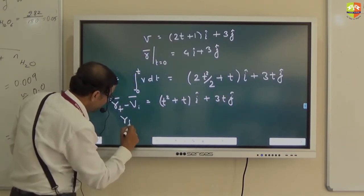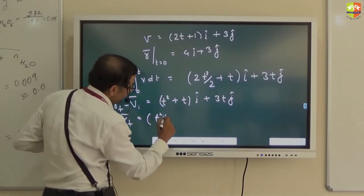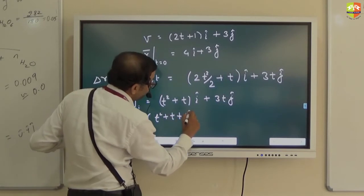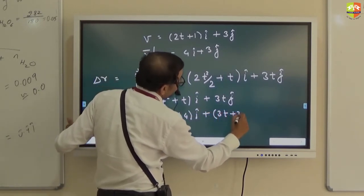So this is final position vector minus initial position vector. This is equal to t square plus t i cap plus 3t j cap. So final position vector is this plus 4i plus 3j. So t square plus t plus 4i cap plus 3t plus 3j cap.